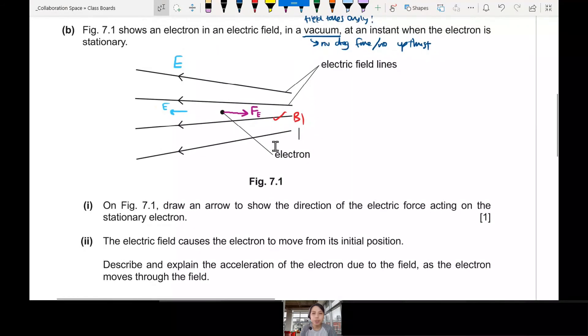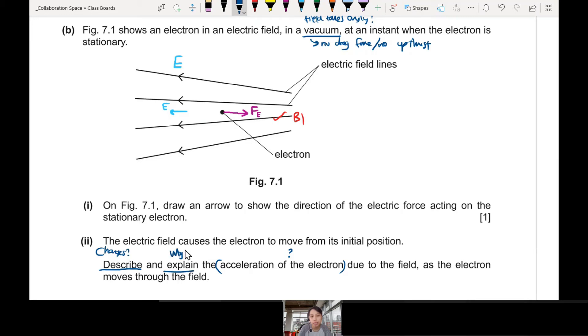Next part, explanations. The electric field causes the electron to move from its initial position. Describe and explain the acceleration of electron due to the field, as it moves through the field. There's two things you need to do here. We need to describe acceleration of electron. You need to tell me a story. What is the acceleration of electron? How does it change? Describe usually it's like changes. And explain, you must say why you say it changed like that. Explain usually is linked to why.